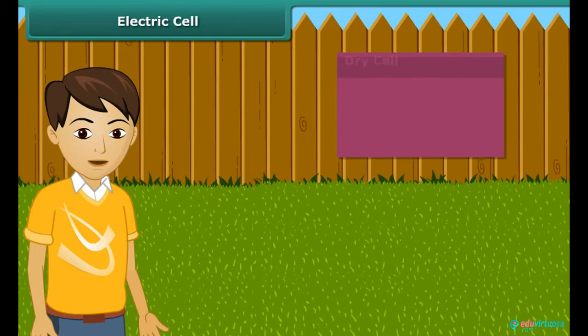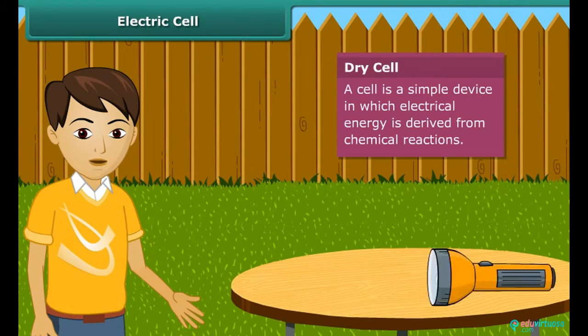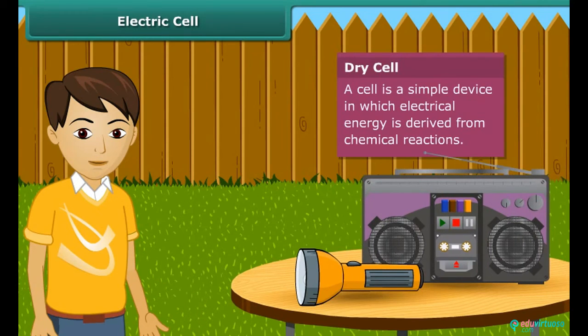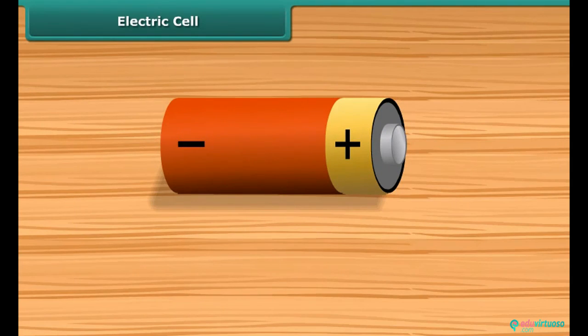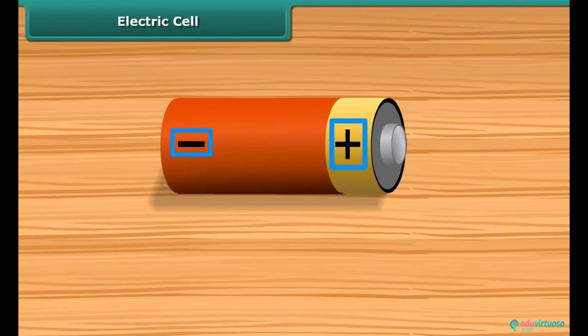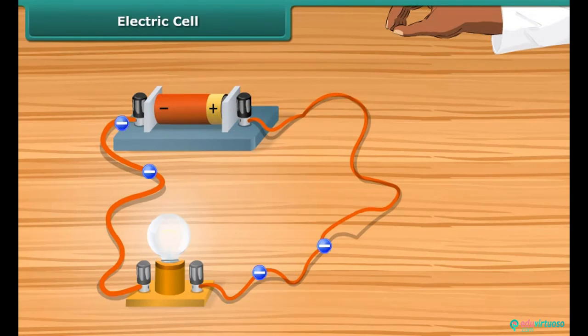A dry cell battery used in a torch or transistor radio is a source of electric current. Every battery has two terminals marked plus and minus. When a metallic wire connects these two terminals, the electrons resulting from chemical reaction start flowing through the wire, constituting an electric current. These electrons flow from the negative to positive terminal.